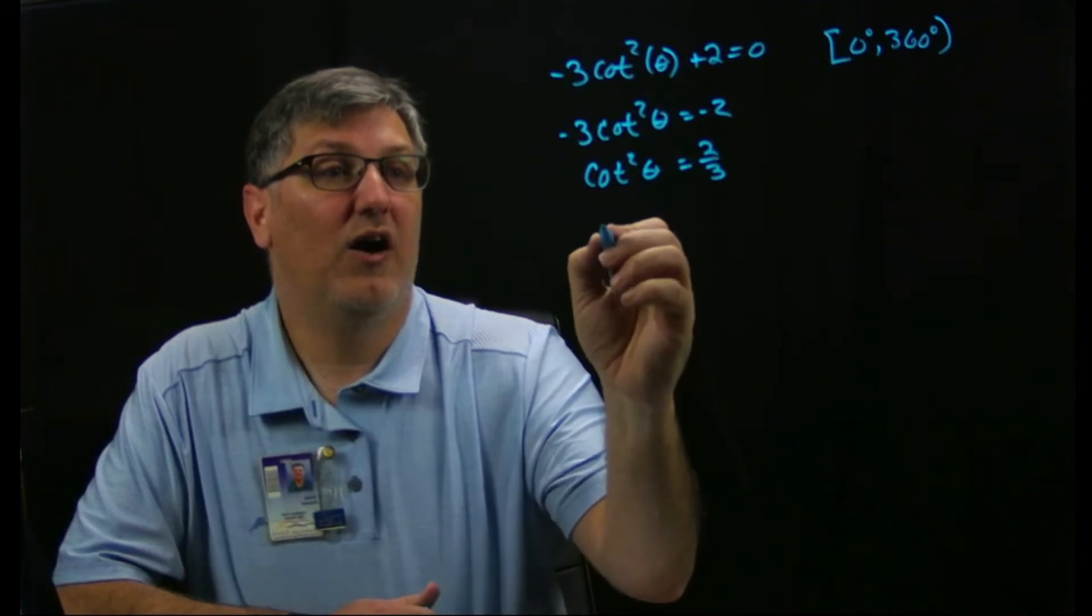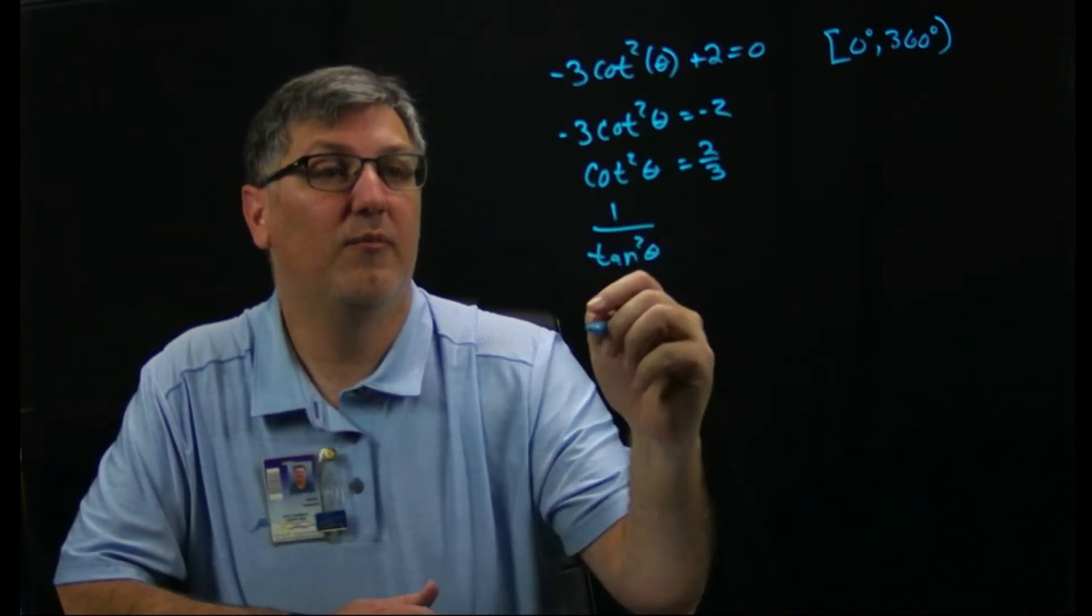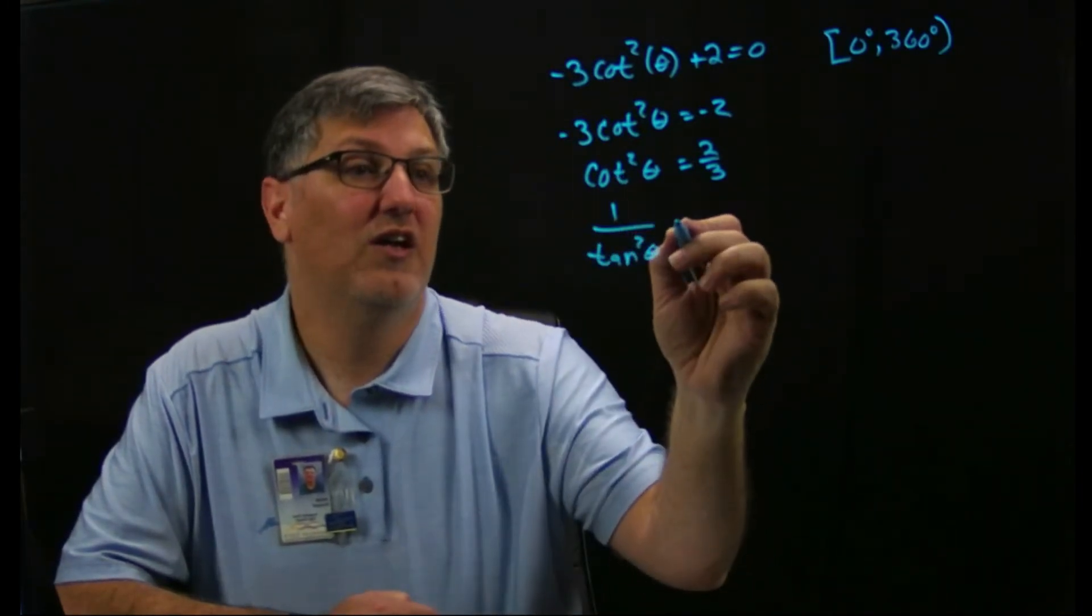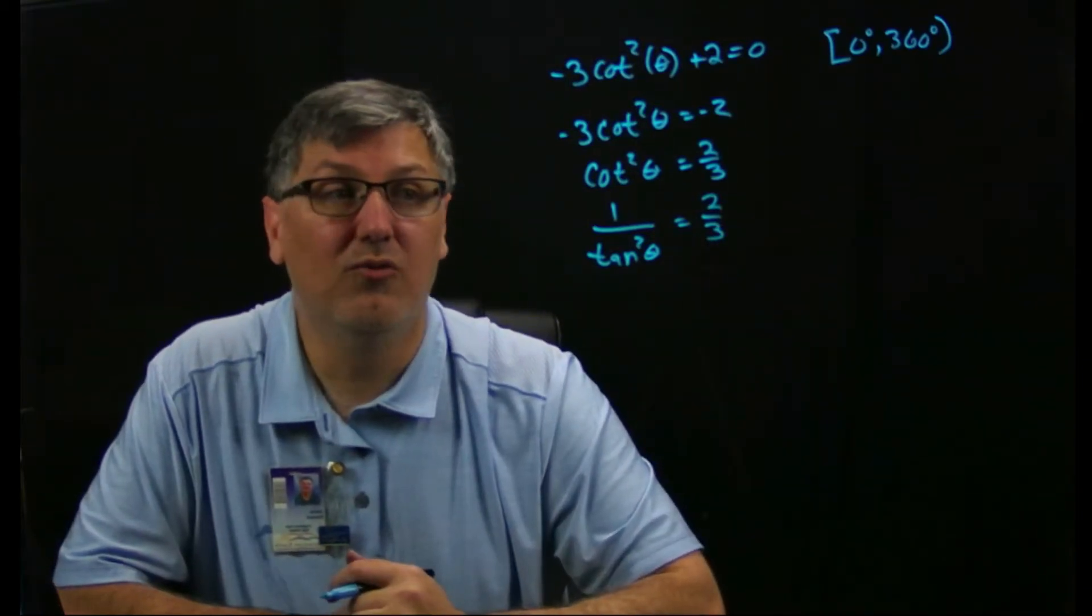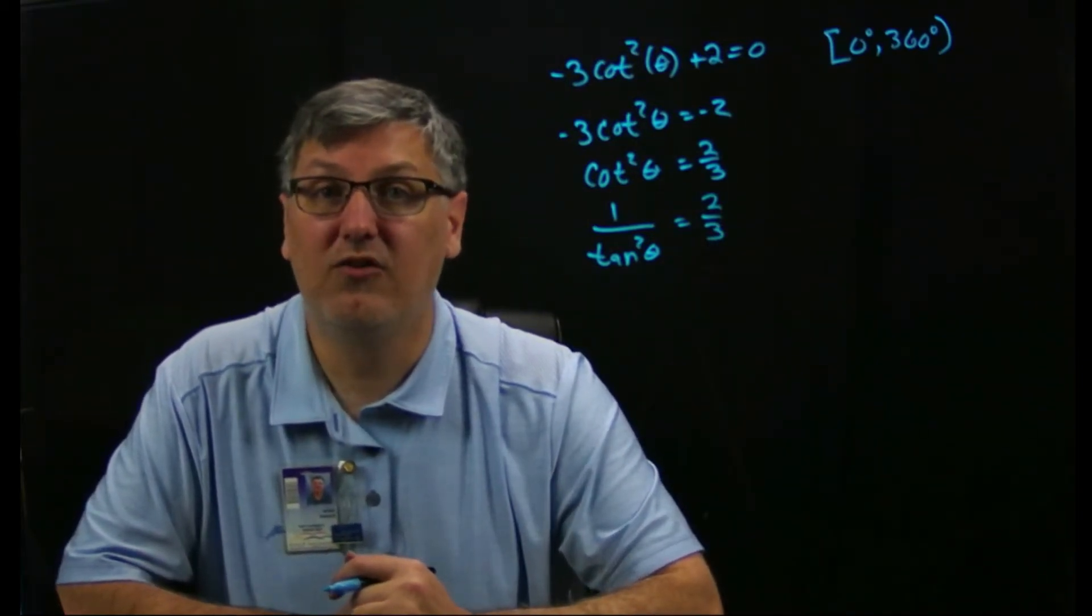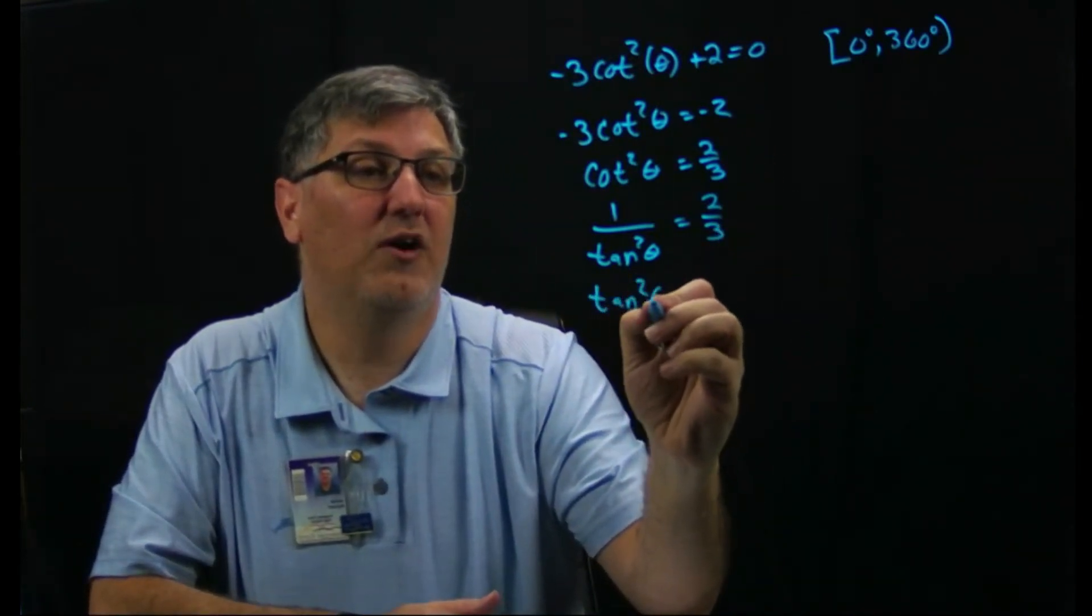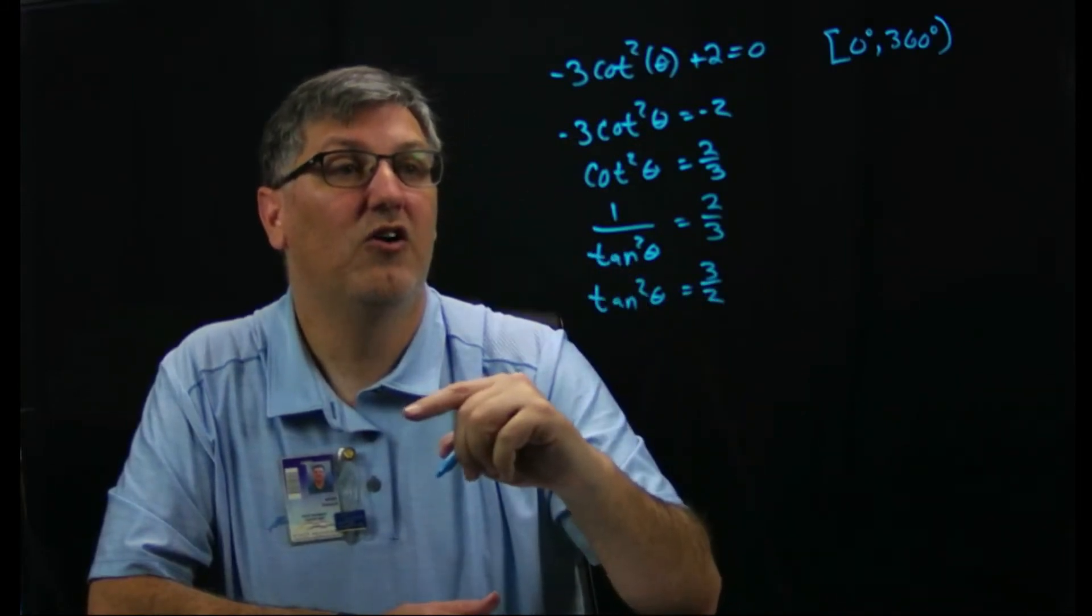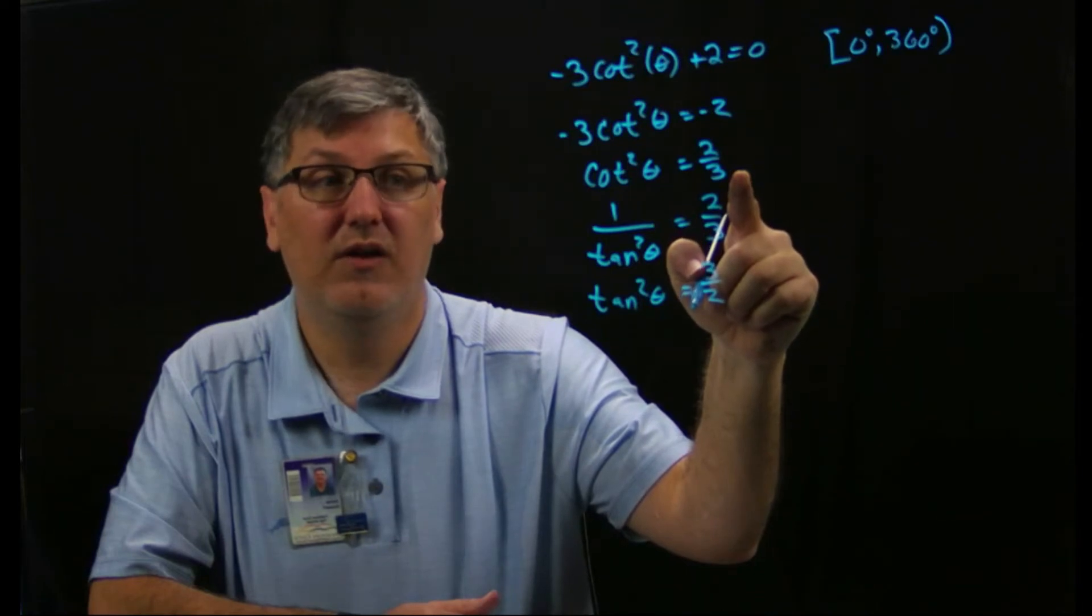All right, so here I'm going to write this as 1 over tangent squared theta, because we know that cotangent is basically the reciprocal of tangent. And this equals two thirds. Now what I can do on one side I can do the other. I can flip both of them and I can say tangent squared theta equals 3 over 2.